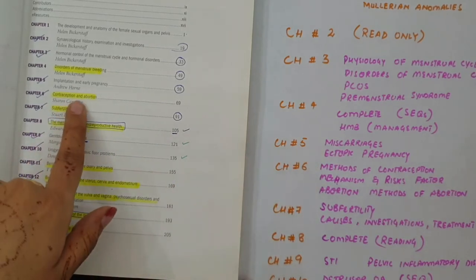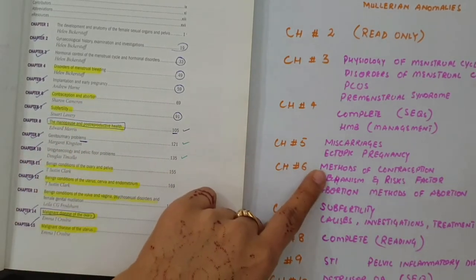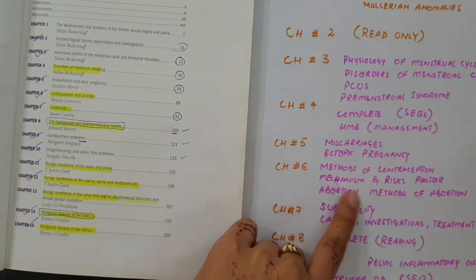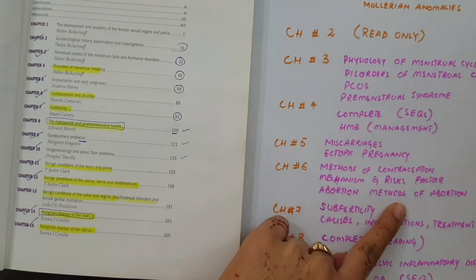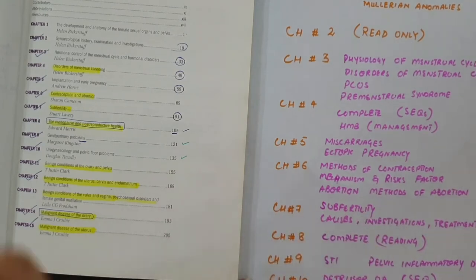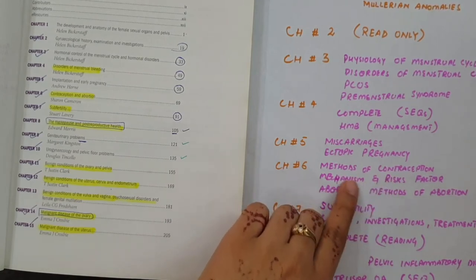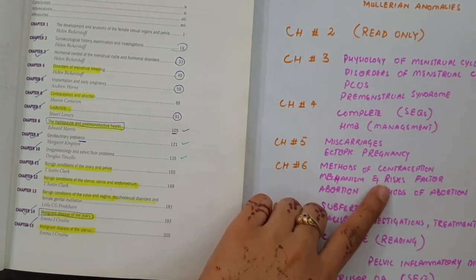The sixth chapter is Contraception and Abortion. Most important are methods of contraception, mechanism and risk factors, and abortion methods of abortion. Mechanism and risk factors of contraception - how contraception works, what is the mechanism of action, and what are the risk factors. Abortion and methods of abortion.